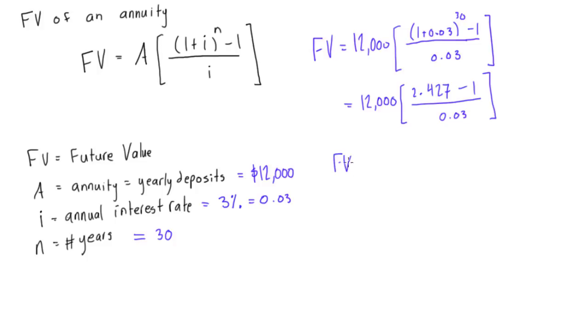and then we'll find once we solve for all of this, we'll find that the future value of this annuity or all these investments that we've been making is going to equal $570,904.98.